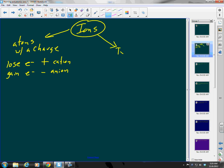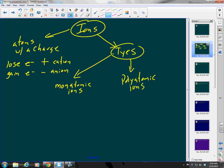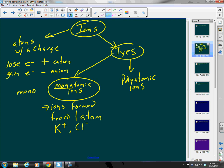Now, we have types of ions beyond this, and we have things that are monatomic ions, and we have polyatomic ions. Monatomic, what do you think monatomic is? Mono means one. So these are ions formed from one atom.